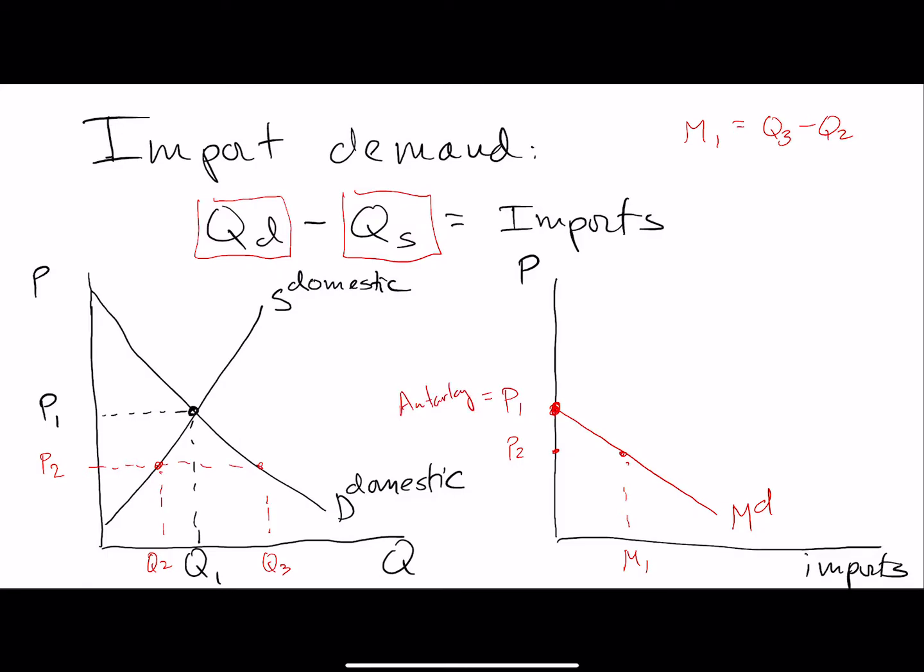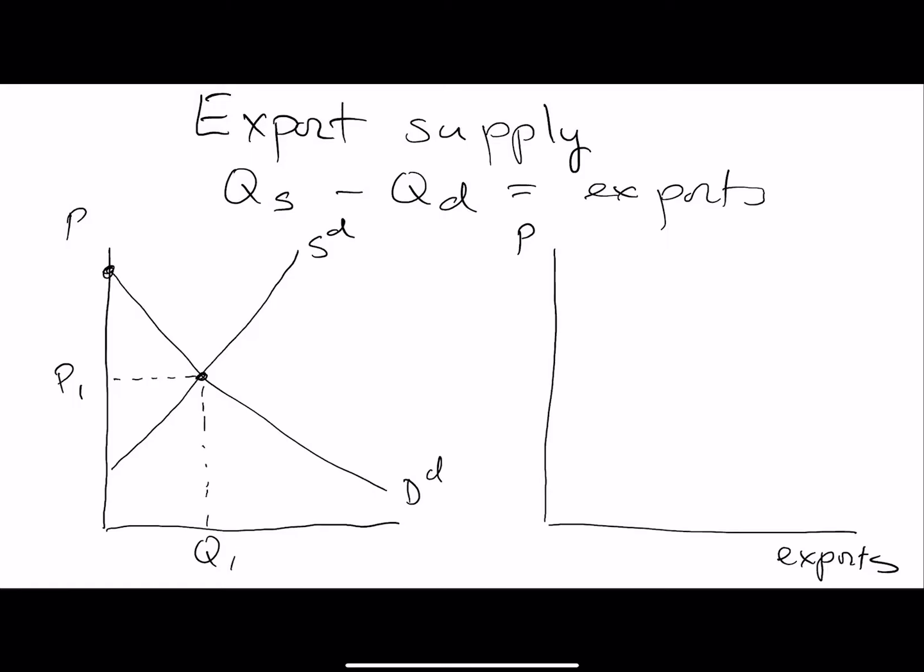Export supply would be the same kind of relationship where at the price P1 there are no exports, but if the price goes up to say P3 you'll have this amount of exports. If we translate that over to this graph, we have a level of exports associated with P3 which is exactly the same thing as over here. If we connect all the different possible prices that are greater than the autarky price, then you would induce firms to export this product into the international market.